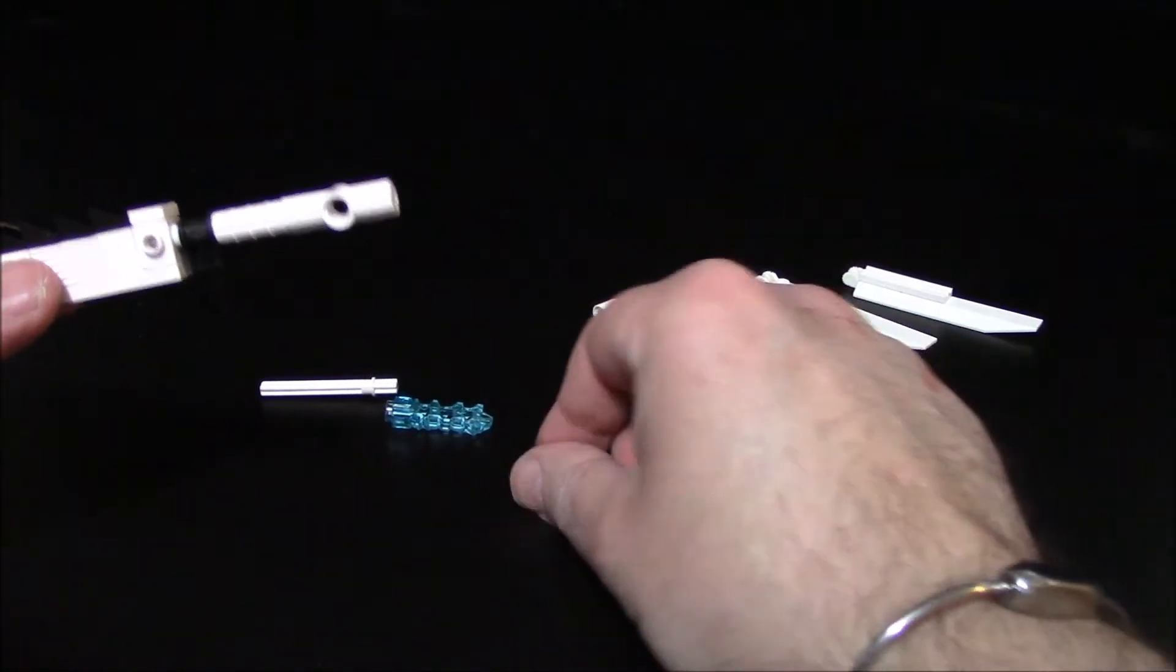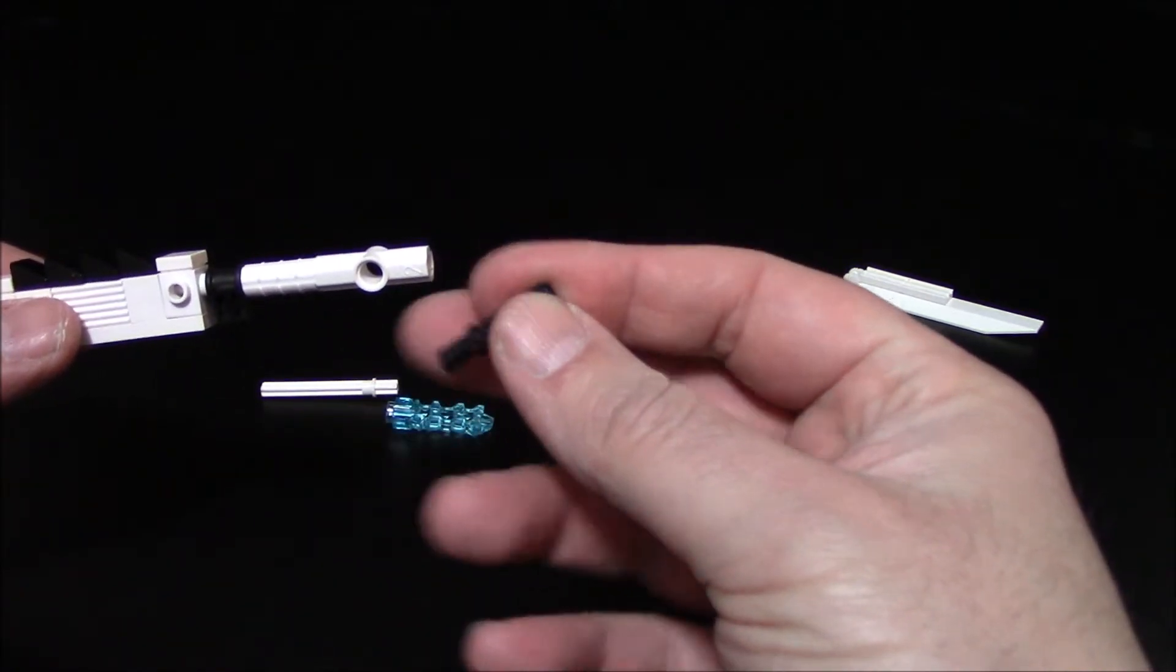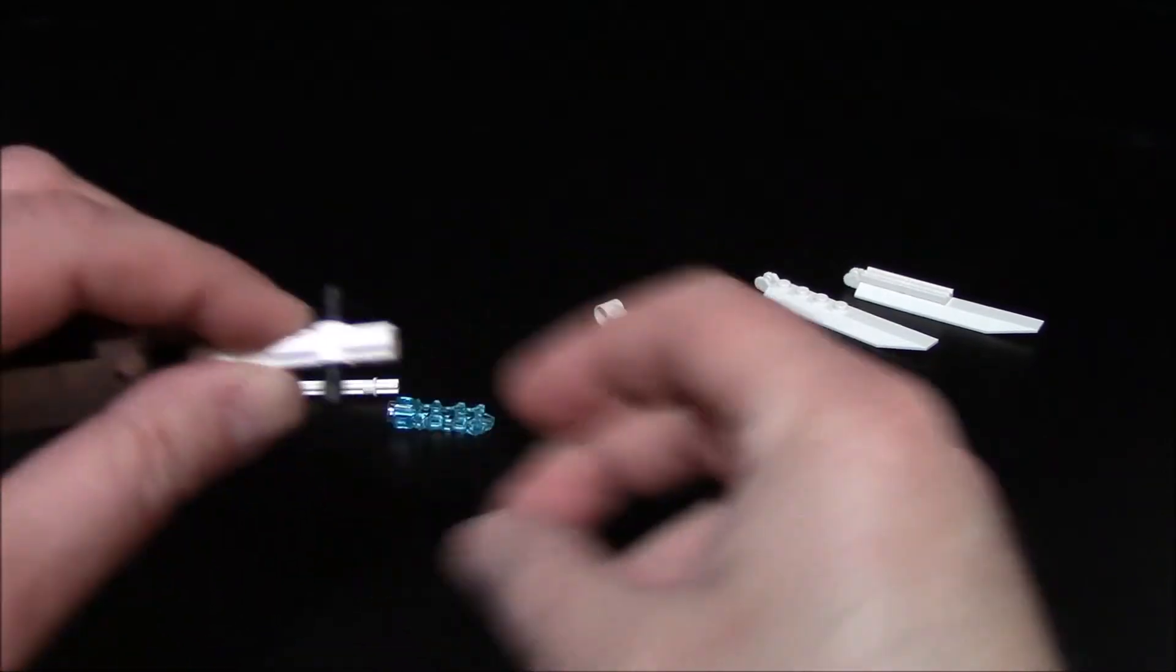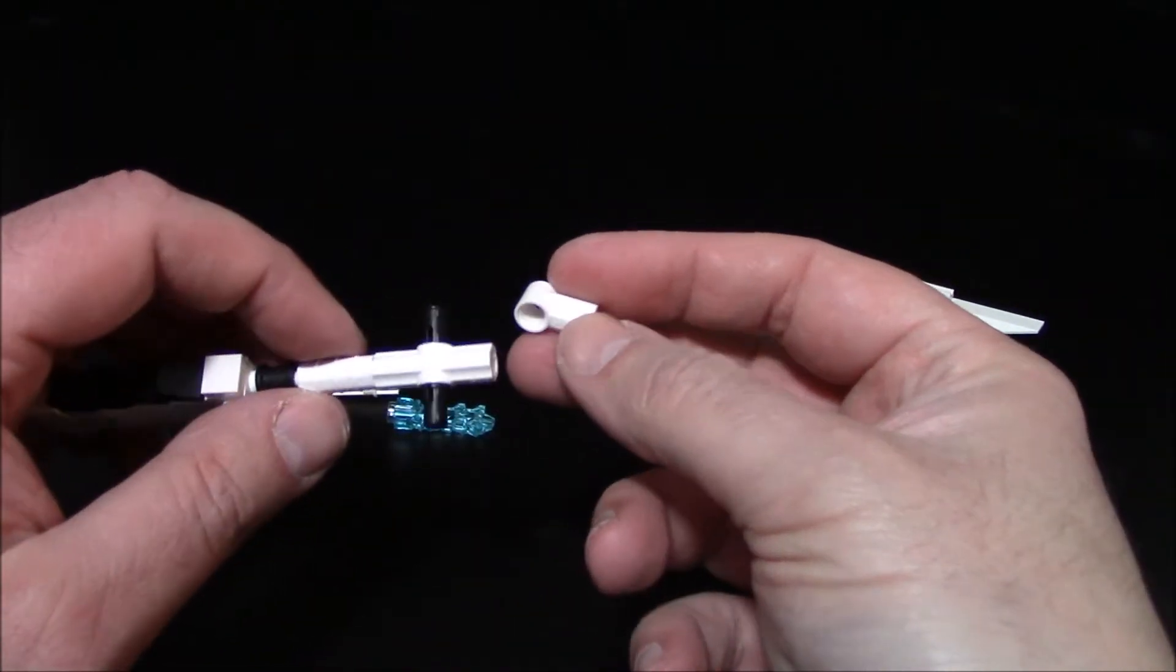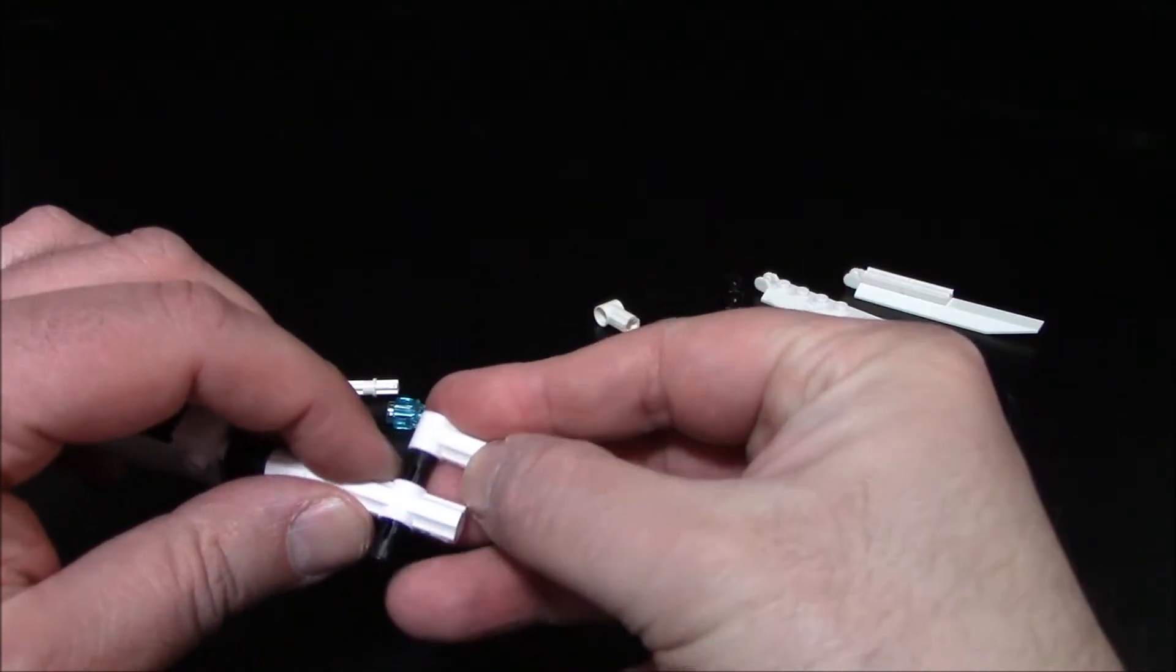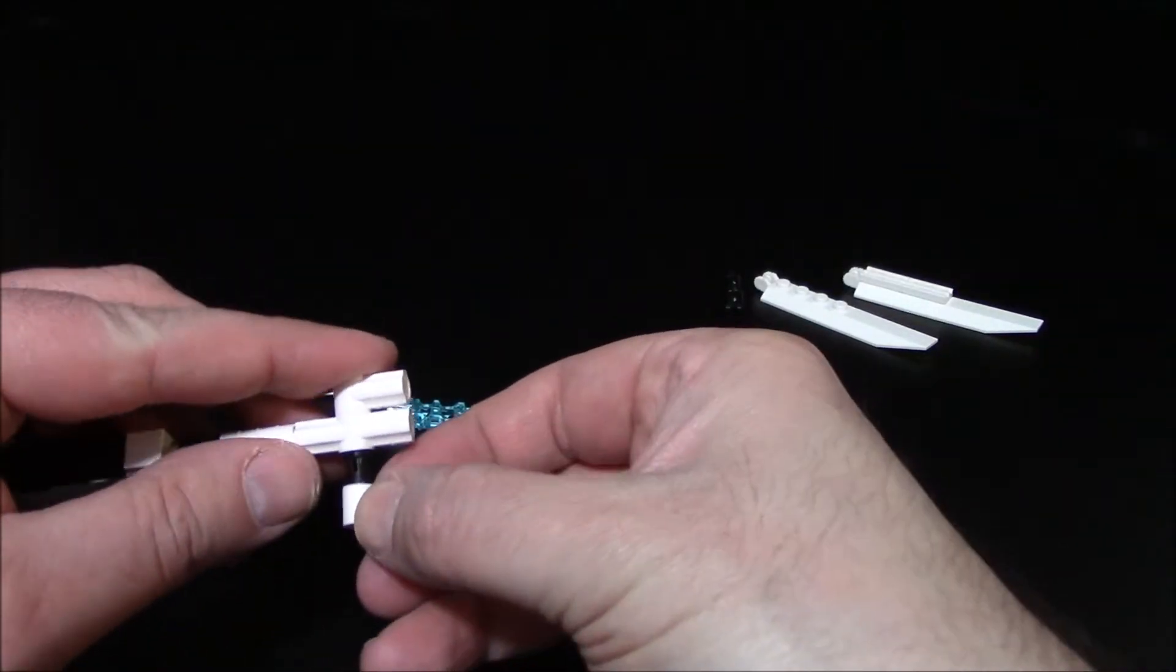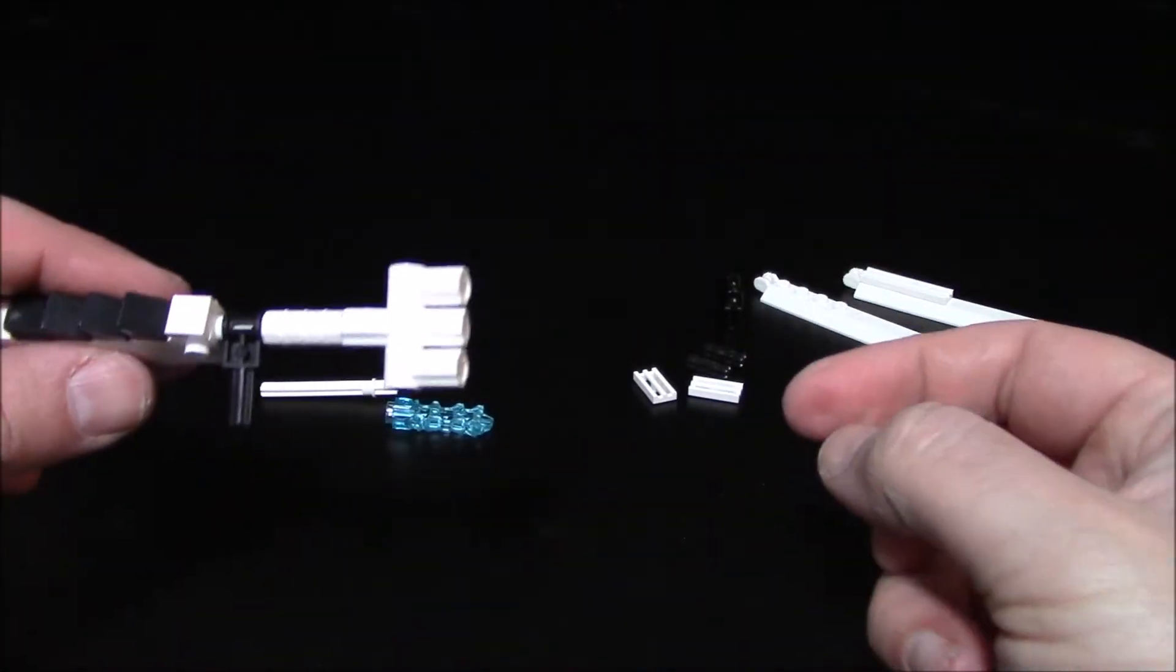From there we're going to take a three long friction pin, push it through like so, and put this technic bushing connector, one on each side like this and one on the other side of the friction pin. It kind of looks like a fork there.